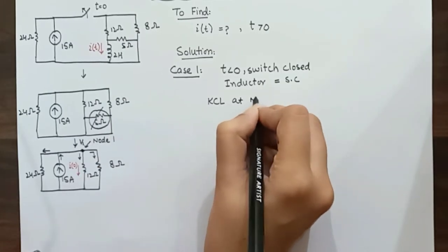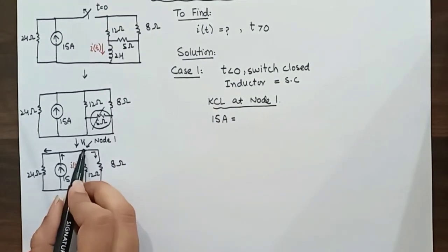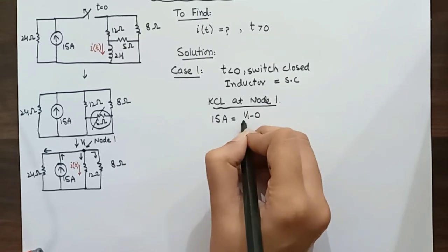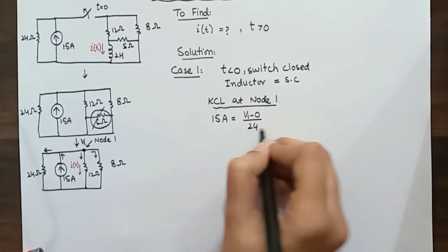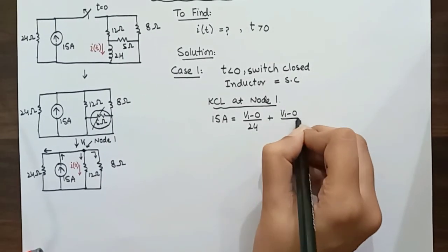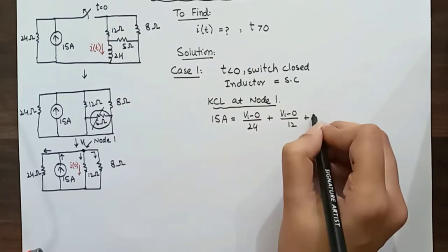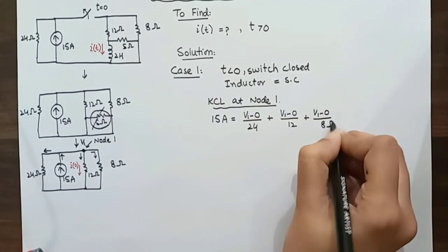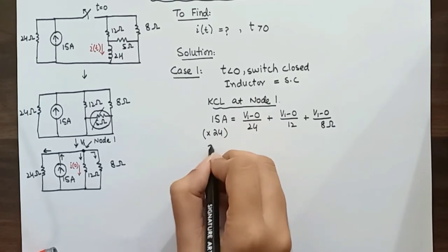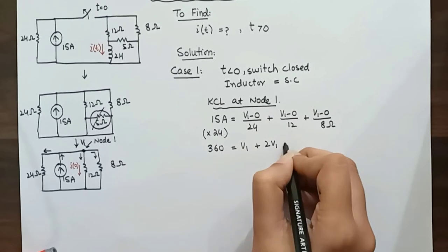Apply KCL at node 1. Current entering 15 amperes is equal to the sum of all the currents leaving this node. So V1 minus 0 over resistance is 24. This is basically current that is difference of voltage over resistor: (V1-0)/24 plus (V1-0)/8 ohms. Simplify this equation by multiplying it with 24 and we get 360 equals V1 plus 2V1 plus 3V1.